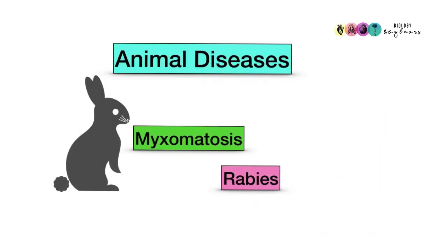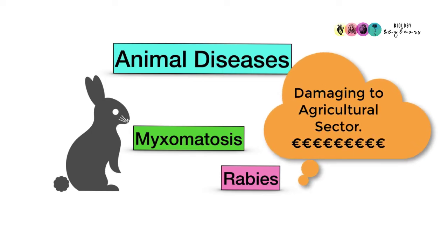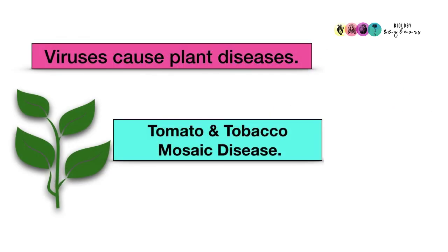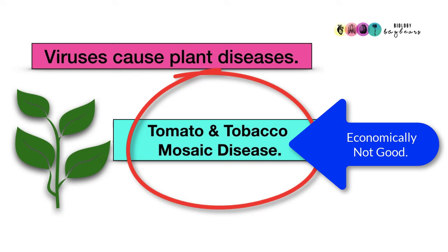There are also some animal diseases caused by viral infections, and this can have a very negative financial impact on the agricultural sector. The same is true for plants—plants can succumb to viral infections. For example, tomato and tobacco mosaic disease is a viral infection.